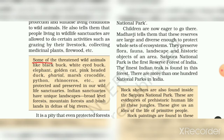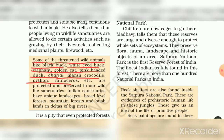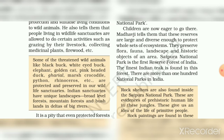Some of the threatened wild animals like black buck, white-eyed buck, elephant, golden cat, pink, hair duck, gharial, musk, crocodile, python, lion, cirrus, etc. are protected and preserved in our wildlife sanctuaries. These are all wild animals that are both protected and preserved in wildlife sanctuaries.